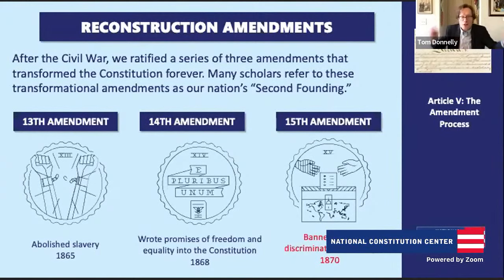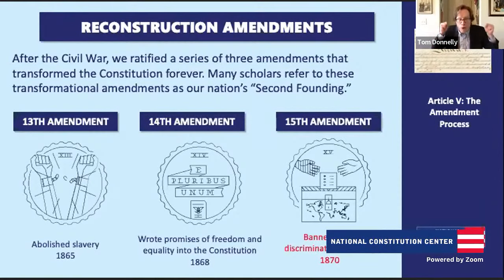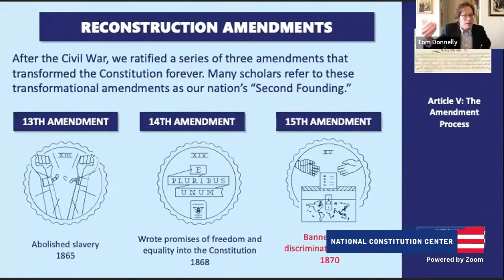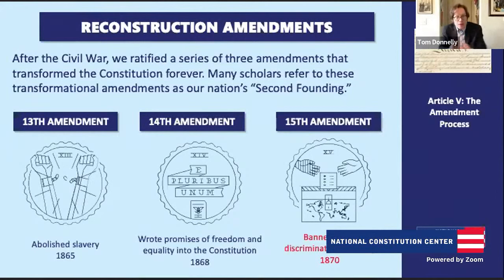The 14th Amendment did many things, but two of the big ones are: the original Constitution was silent on the Declaration of Independence's promise of equality — with the 14th Amendment, we write that promise into the Constitution. The other big thing is that for all of these Reconstruction Amendments, they rebalance the distribution of power between the national government and the states. These amendments give more authority to Congress to attack the legacy of slavery, ensure freedom and equality for all Americans, and protect voting rights from racial discrimination.